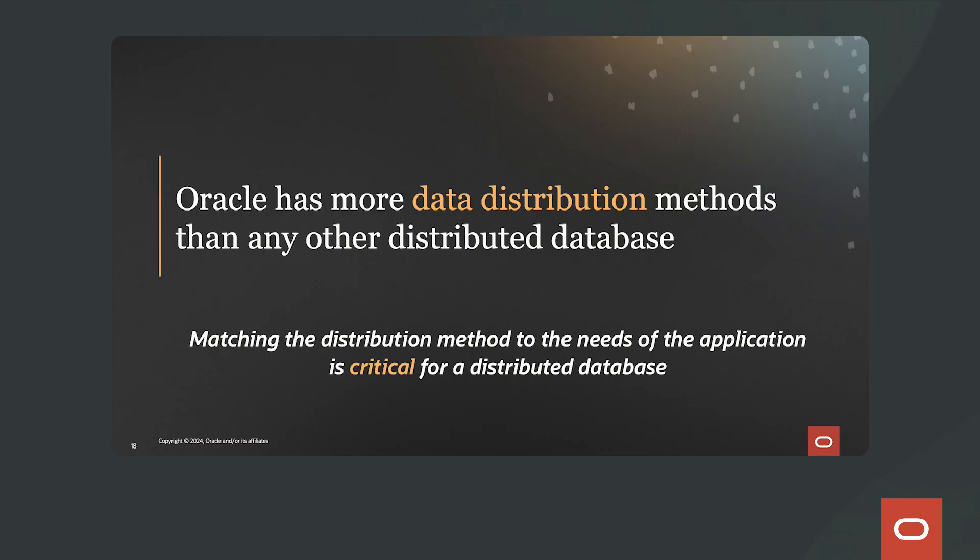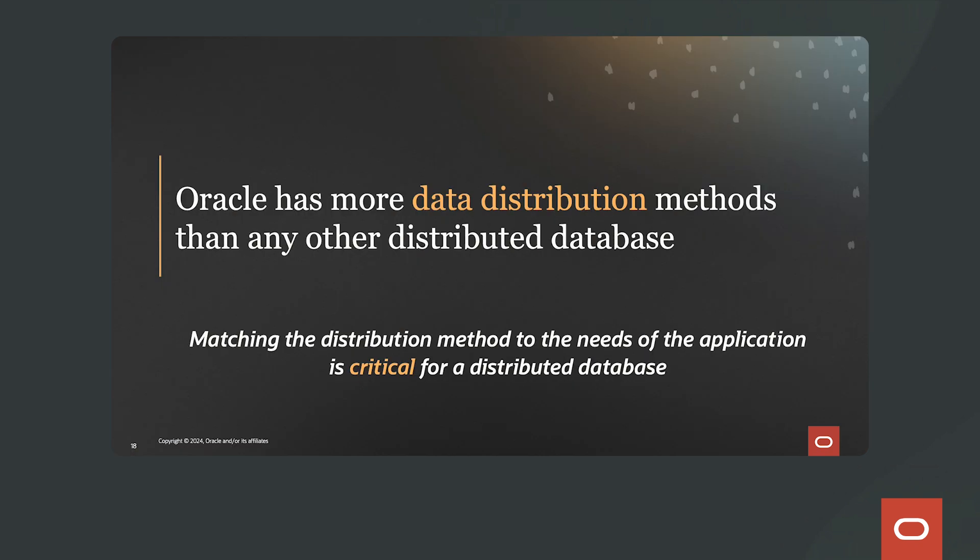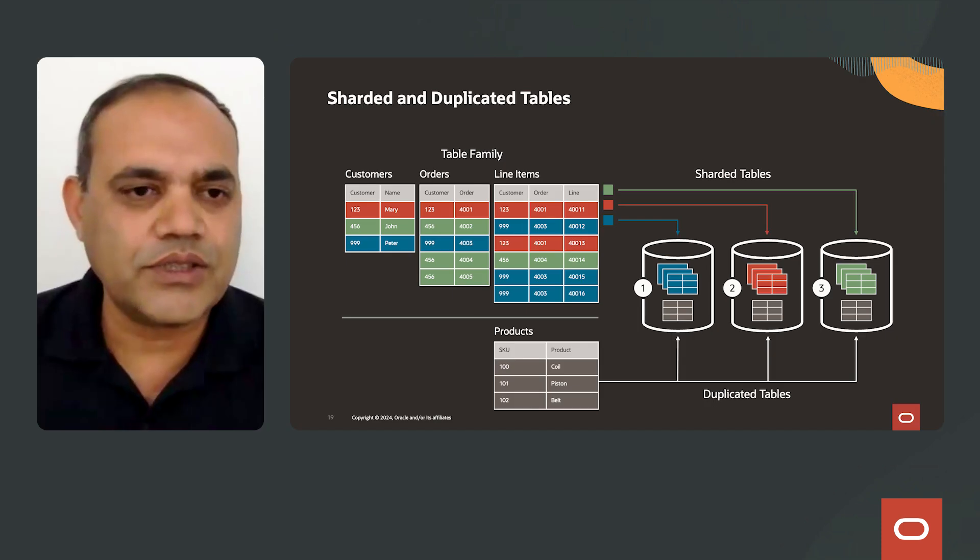Oracle has more data distribution methods than any other distributed database. Data across multiple tables is partitioned, and for a given sharding key, is co-located on one shard. For example, with three tables — customer, order, and line items — the data for Mary, whose customer ID is 123, is co-located on shard number two.